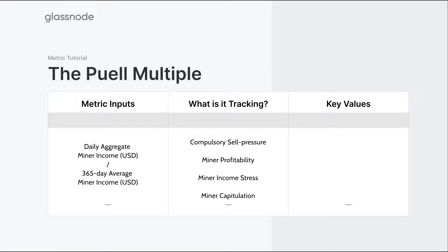What this metric is really tracking is the magnitude of potential compulsory sell pressure coming from miners. It looks at miner profitability — whether miners are making an extraordinarily large amount of value compared to their yearly average, whether they're under a period of income stress where income has fallen well below the yearly average, and whether we're approaching a point of miner capitulation where the overall market is severely underneath that yearly average, suggesting widespread income stress.